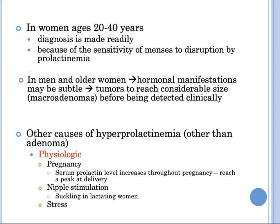Prolactinemia is more readily diagnosed in women, especially between 20 to 40 years, because it disrupts the menstrual cycle. In men and older women, the hormonal manifestations may be subtle, and the tumor may reach considerable size — a macroadenoma — before being detected clinically. There are other causes of hyperprolactinemia besides adenomas: serum prolactin level increases throughout pregnancy and peaks at delivery, nipple stimulation during suckling in lactating women increases prolactin level, and many types of stress may also induce prolactinemia.